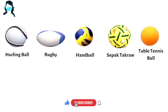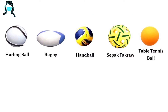Today, this is our first activity in Latin class 26. In this display, you can see some balls named in English: hurling ball, rugby, handball, sepak takra, table tennis ball. You should find the Latin words for these English balls and post in the comments. I will check and tell you whether it is right or wrong.